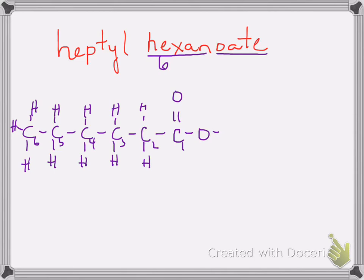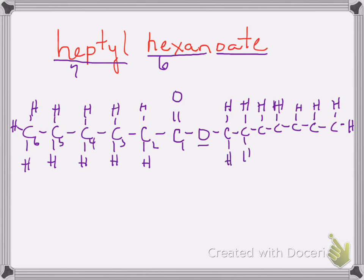On the other side, attached to the oxygen that I just underlined, goes this heptyl group. Heptyl is a seven carbon chain. So I need to add on a seven carbon chain here. There is my seven carbon chain. And I just need to add the rest of the bonds, or hydrogen bonds, to those carbons. Because there are no other substituents on that chain. And so there's the correct structure for heptyl hexanoate.